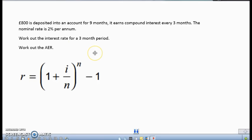Let's have a look at another example. This question here is a little bit tricky again. We've got £800 being deposited into an account for nine months. It earns compound interest every three months. The nominal rate is 2% per year. So it's actually told us what the nominal rate for the year is. So i for the year is 2%. It says, work out the interest rate for a three-month period. Well, I know what it is for the year, it's 2%. How many lots of three months are there throughout the year? That's what we call quarterly, because we've got four lots of three months. So all we need to do really is take the yearly interest rate and then divide it by four. So the answer to that would be 0.5%.